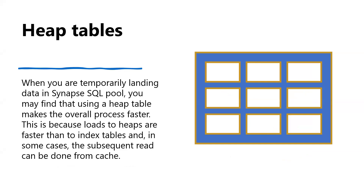The next index type is heap tables. When temporarily landing data in Azure Synapse SQL pool, using a heap table makes the overall process faster because loads to heap are faster than to index tables. In some cases the subsequent read can be done from caching. Loading the table to a heap table is much faster than loading the data to a clustered column store table. Loading data to a temporary table also loads faster than loading to permanent storage.